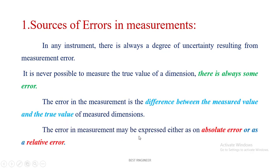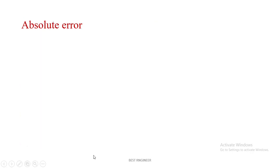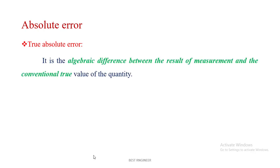The error in the measurements may be expressed either as an absolute error or as a relative error. This absolute error is classified into two types. First one is a true absolute error; it's the algebraic difference between the result of measurement and the conventional true value of the quantity.